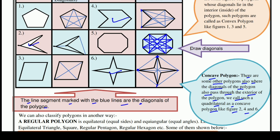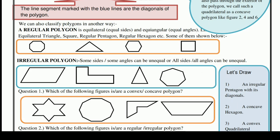We can also classify polygons in another way. A regular polygon is equilateral — that means equal sides — and equiangular — equal angles — like an equilateral triangle, square, regular pentagon, and regular hexagon. Some of them are shown below.